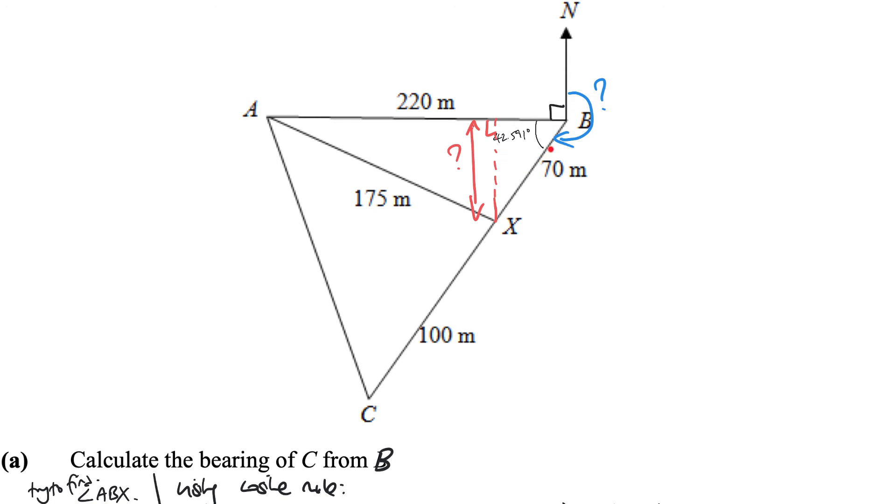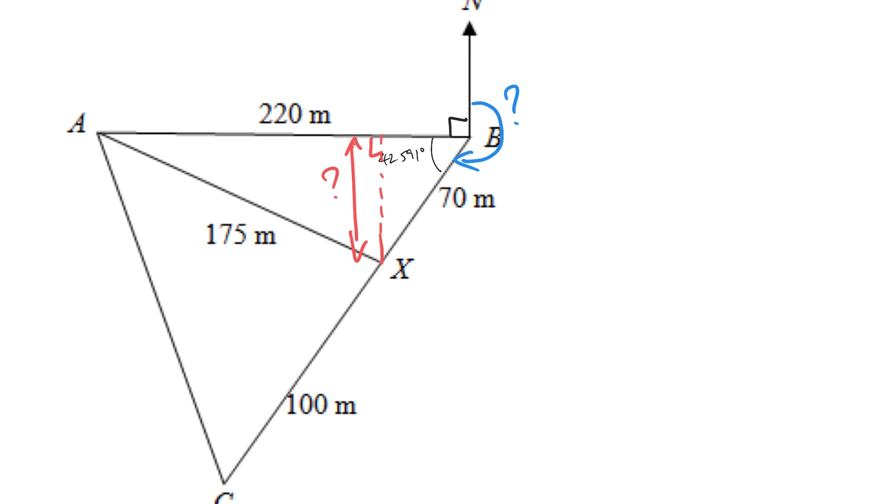And thankfully, we know this side and we know the angle in between. We already solved for it. So actually, we can use our SOHCAHTOA to solve for it. Basically, we are looking at this triangle where we're trying to find this side. We know this is 70 and we know this is 42.591. If you turn it around, you will see that this is my hypotenuse, and therefore this is the angle that I know. So this is the opposite side. So this is my opposite side and this is my adjacent side, the side that is adjacent to this angle or next to this angle. So I know my hypotenuse, I'm trying to find my opposite.